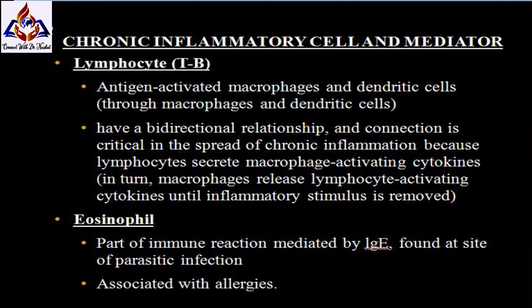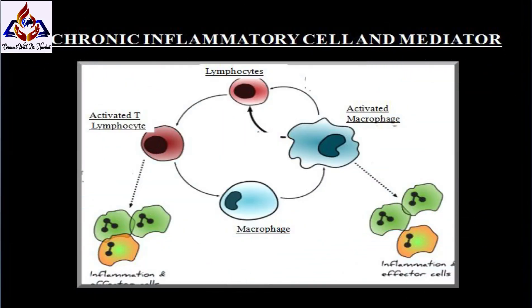Lymphocytes are activated by antigen-presenting macrophages and dendritic cells. Lymphocytes and macrophages have a bidirectional relationship that is critical in the spread of chronic inflammation: lymphocytes secrete macrophage-activating cytokines, and in turn macrophages release lymphocyte-activating cytokines, until the inflammatory stimulus is removed. Eosinophils, part of the immune reaction mediated by IgE, are found at sites of parasitic infection and are also associated with allergies.